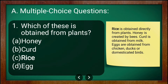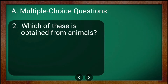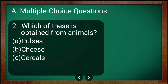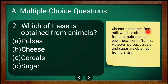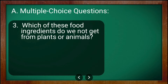Question number two: which of these is obtained from animals? The options are pulses, cheese, cereals, and sugar. The correct answer is cheese. Cheese is obtained from milk, which comes from animals such as cows, goats, or buffalos. However, pulses, cereals, and sugar are obtained from plants.